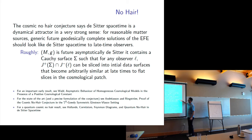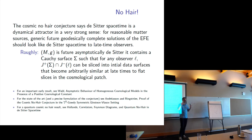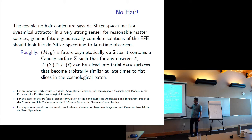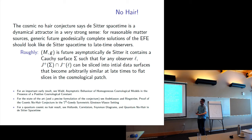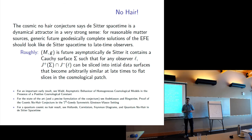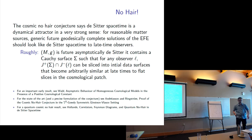Roughly speaking, a spacetime is future asymptotically de Sitter if it contains a Cauchy surface near the beginning of time such that for any observer, the causal past of the observer lying to the future of the Cauchy surface can be sliced into initial data surfaces that become arbitrarily similar at late times to flat slices in the cosmological patch. So it looks not just like de Sitter, but specifically like the cosmological patch — more and more like exponential expansion. From some time onwards it's basically flat in that sense.